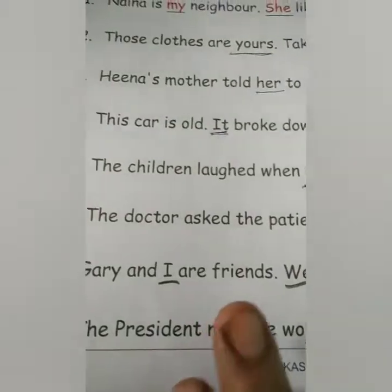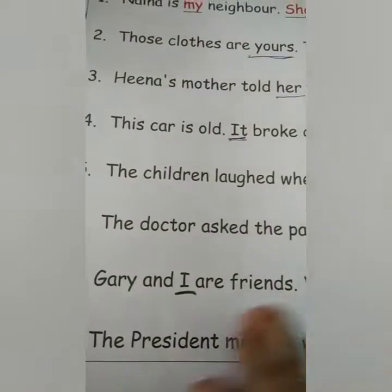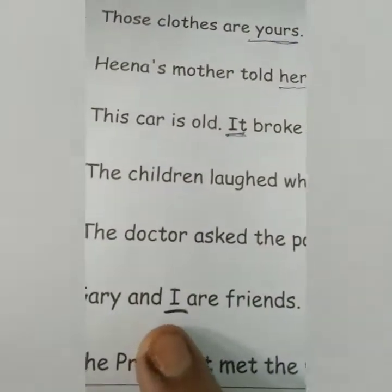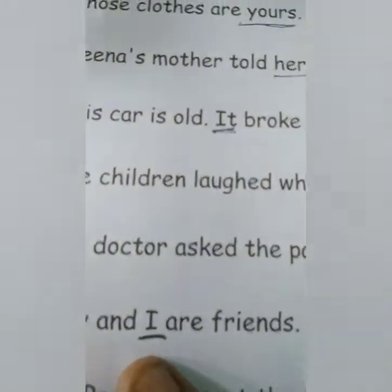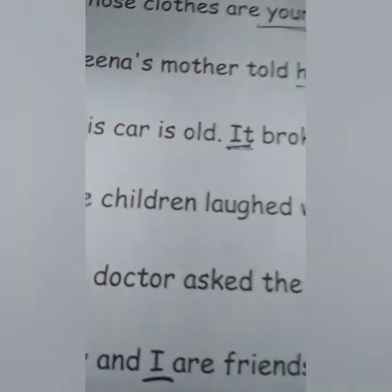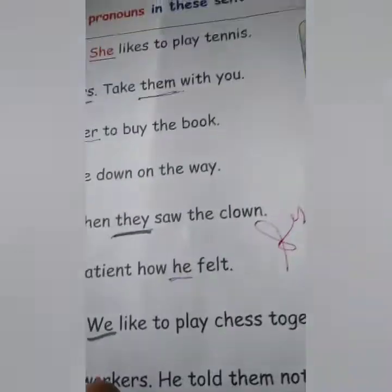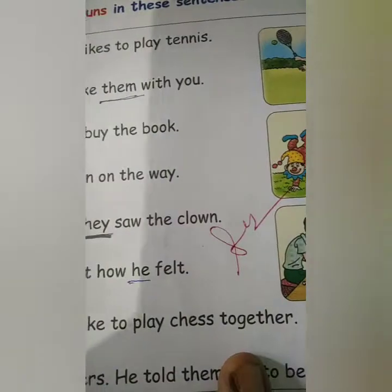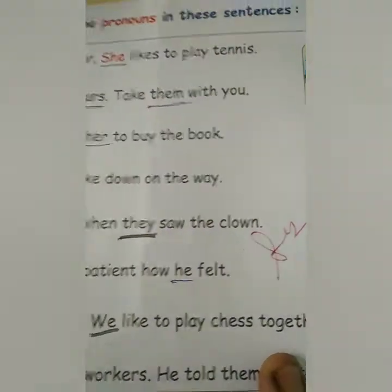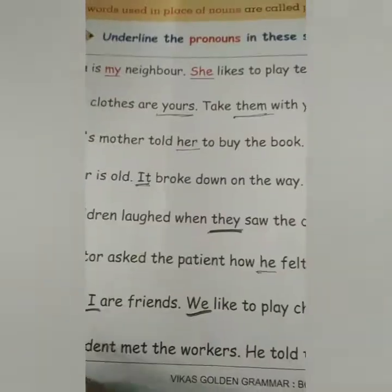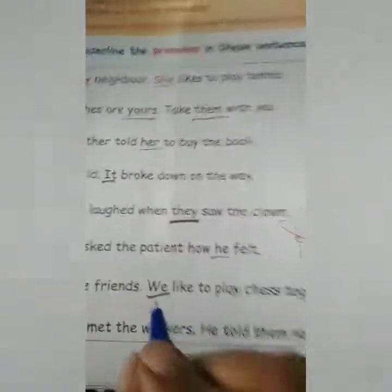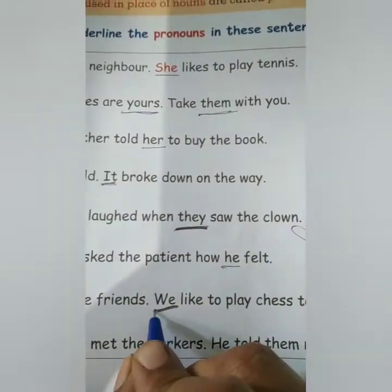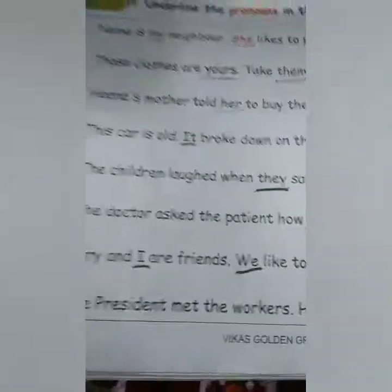Gary and I are friends. Instead of writing his name, I used 'I'. So 'I' is a pronoun here. We like to play chess together. For Gary and I together, what pronoun is used? We. So 'we' is the pronoun to underline.